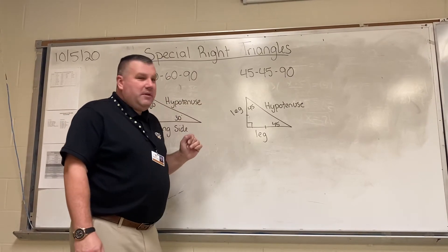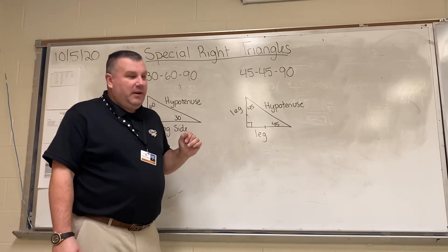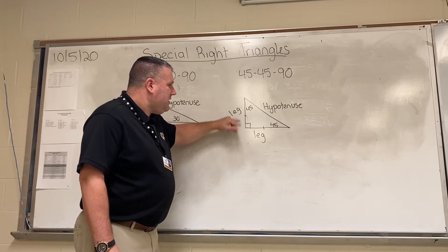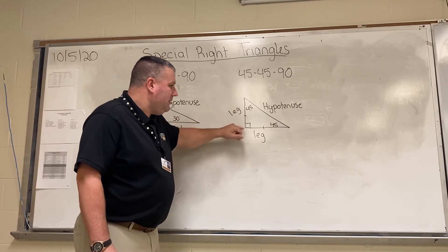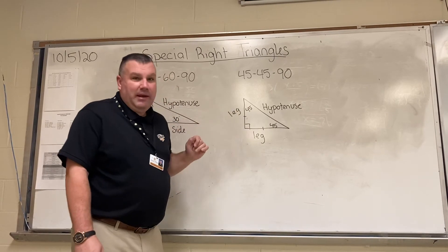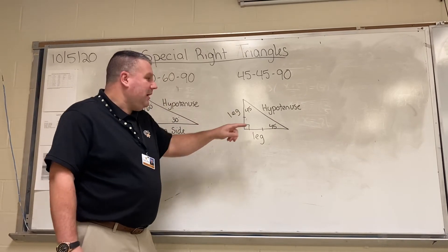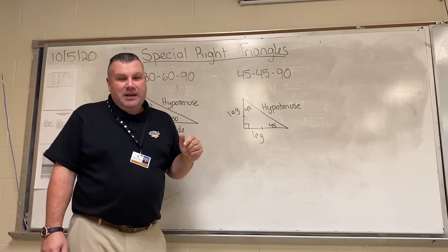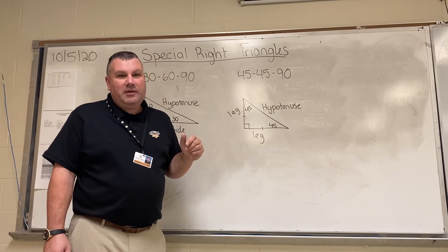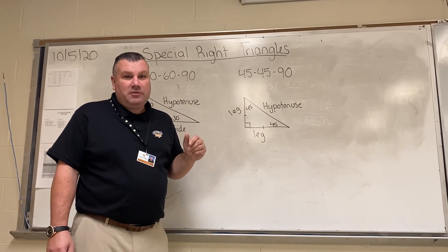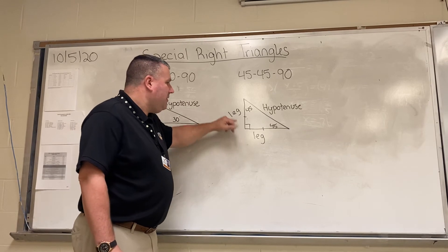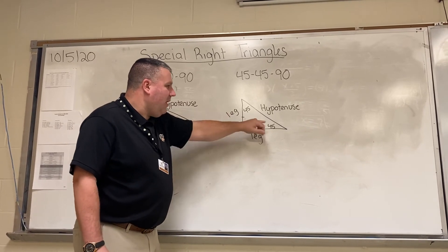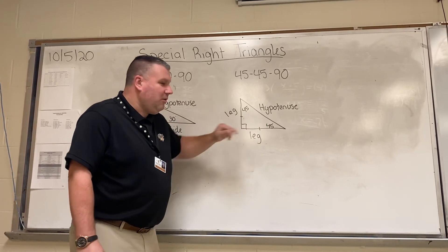For the 45-45-90 triangle, if you notice here that both of these legs are the same length — you can tell because both of the angles are 45 degrees. This is an isosceles triangle, which means two out of the three legs are congruent. Both of these legs are the same length because they're opposite the 45-degree angles.